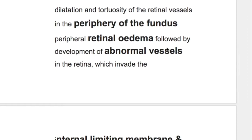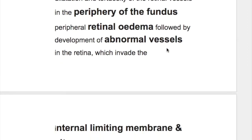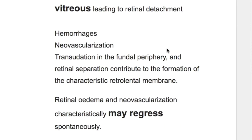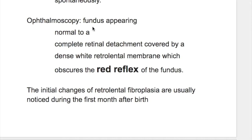Peripheral retinal edema is followed by development of abnormal vessels in the retina, which invade the internal limiting membrane and vitreous, leading to retinal detachment. Hemorrhage, new vascularization, and transudation in the fundal periphery contribute to the formation of the characteristic retrolental membrane. Ophthalmoscopically, there is complete retinal detachment covered by a dense white retrolental membrane, which obscures the red reflex of the fundus.